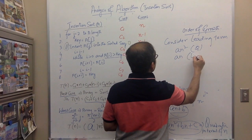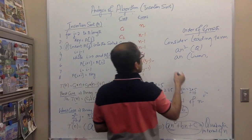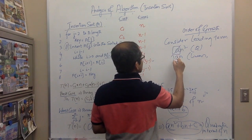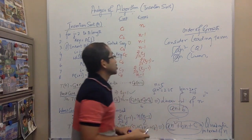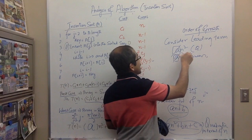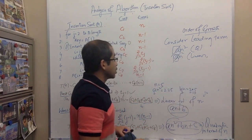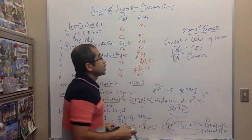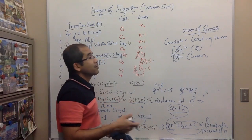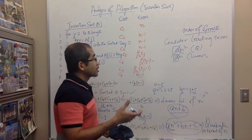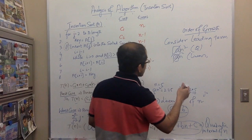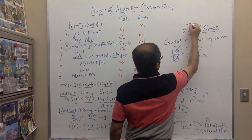We can even ignore the constant coefficient of the leading term, because the constant a is fixed and does not significantly affect the growth rate. Whether a is two or five, the dominant factor is n squared itself, since the growth rate of n² is much faster than any lower-order term. This is called the order of growth or rate of growth of an algorithm.